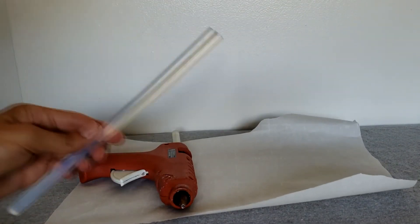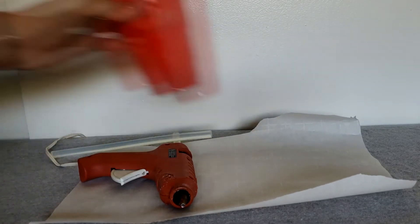So the first thing we'll need is parchment paper, hot glue gun with extra hot glue sticks just in case, a cup, and our paint brush.